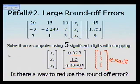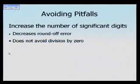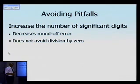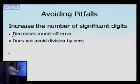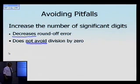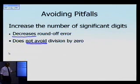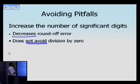So the question arises: we have two pitfalls in the Naive Gaussian method — is there a way to reduce round-off error or avoid division by zero? One option is to increase the number of significant digits by going from single precision to double precision or quad precision. Increasing precision will decrease round-off error, but it cannot fix division by zero, because whether you use single, double, or quad precision, dividing by zero is still a problem.